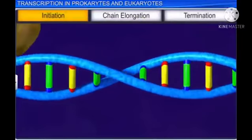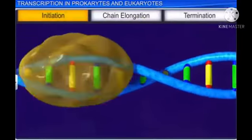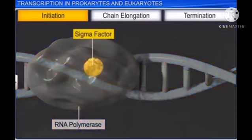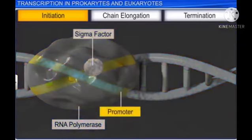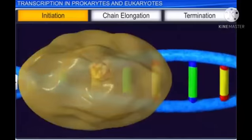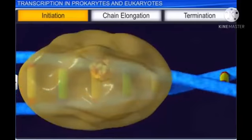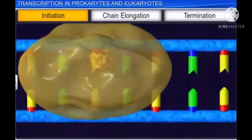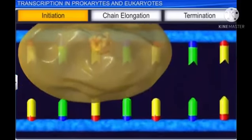In the first stage, RNA polymerase along with the initiation factor, denoted as sigma, binds to the promoter sequence in DNA and initiates transcription. This helps in the opening of the DNA helix and separates the two DNA strands.